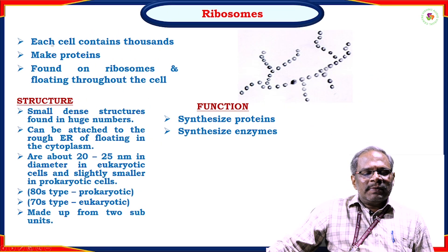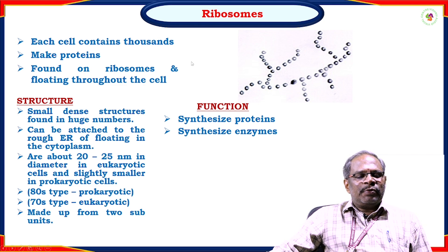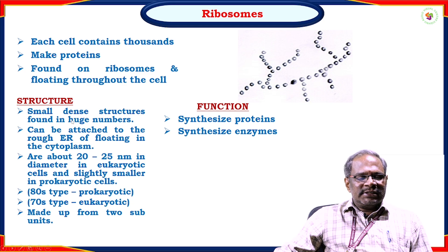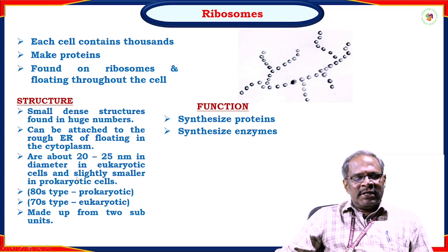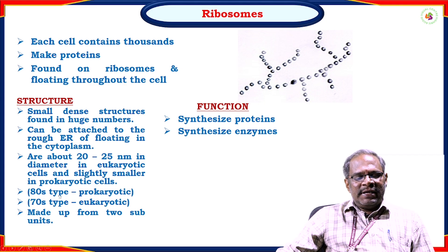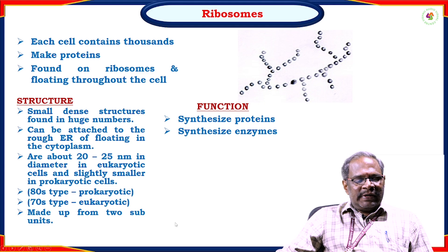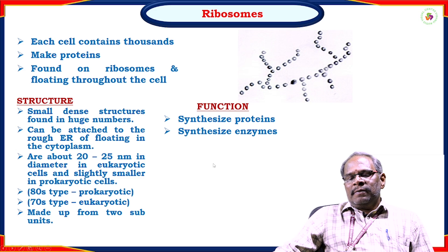Ribosomes: each cell contains thousands of ribosomes involved in the biosynthesis of protein. They are found attached to the rough endoplasmic reticulum or floating in the cytoplasm. They are small dense structures found in large numbers, around 20 to 25 nm in diameter in eukaryotic cells, and slightly smaller in prokaryotic cells. The prokaryotic cell ribosome type is 70S, and eukaryotic is 80S. They are made up of two subunits. Major functions are protein synthesis and the synthesis of enzymes.